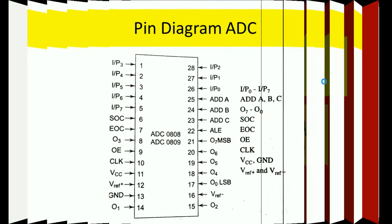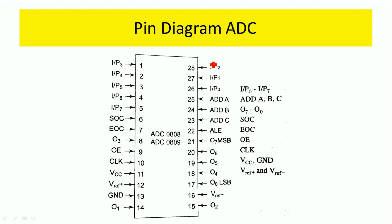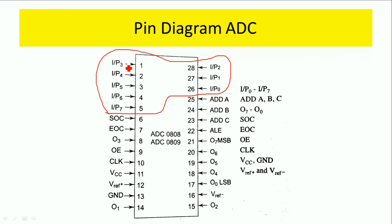First we will see the pin diagram of this analog-to-digital converter. The IC number of this ADC is 0808. For ADC 0808 we have totally 28 pins. In these 28 pins we have 8 analog input pins, that is IP0 to IP7. For these 8 analog inputs we can give 8 analog signals — for example, temperature sensor, pressure sensor, humidity, and so on.